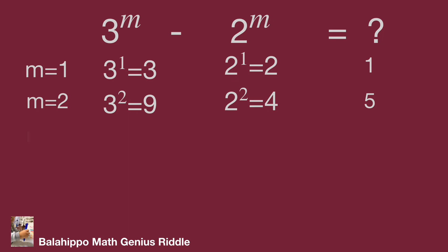m equals 3: 3 cubed equals 27, 2 cubed equals 8. 27 minus 8 equals 19.